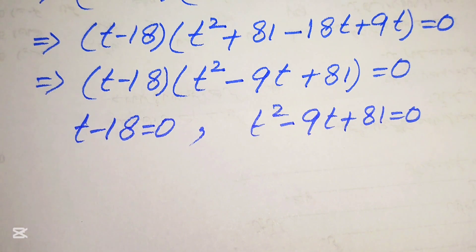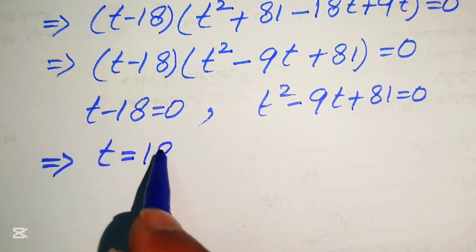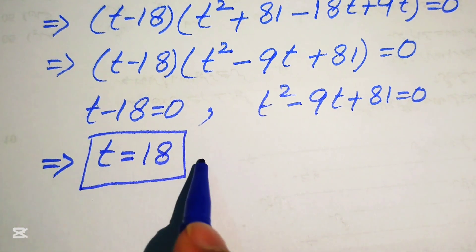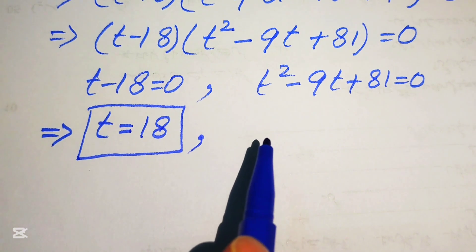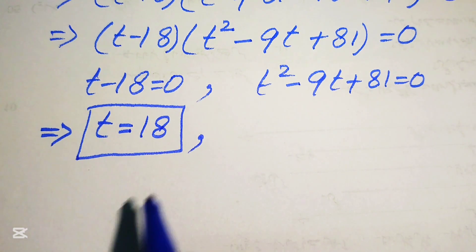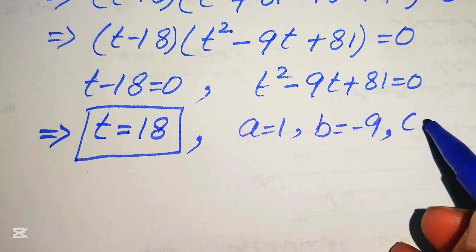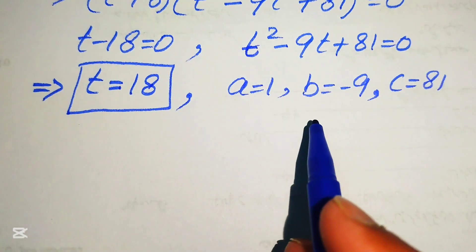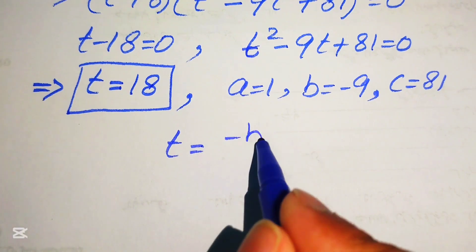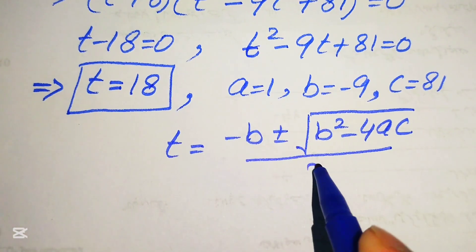In Case 1 we easily get t = 18, which is our first real solution. For the other roots we focus on Case 2, which is a quadratic equation. We apply the quadratic formula with coefficients a = 1, b = -9, and c = 81. The quadratic formula is t = (-b ± √(b² - 4ac)) / (2a).